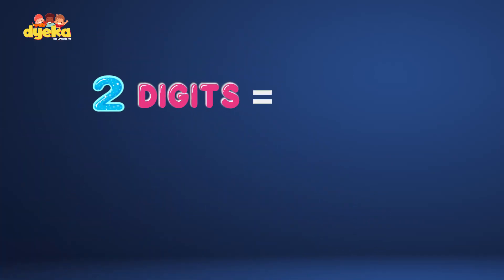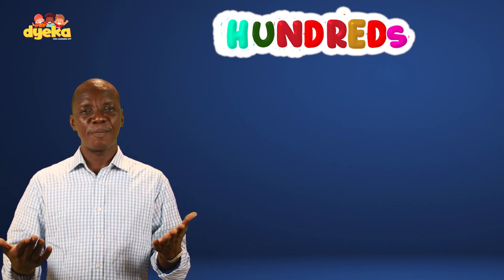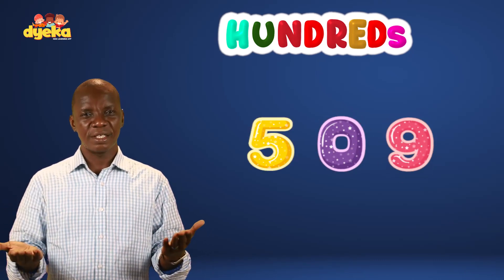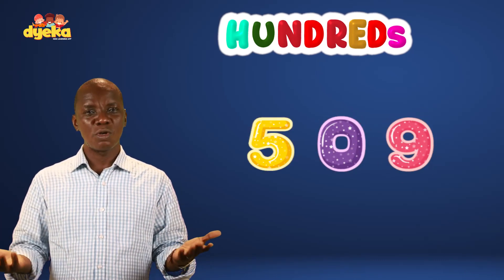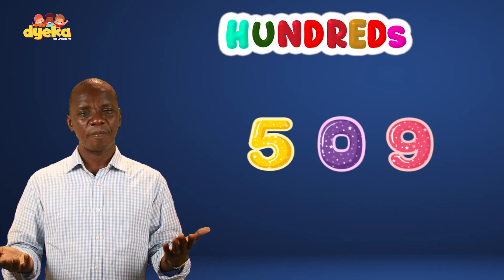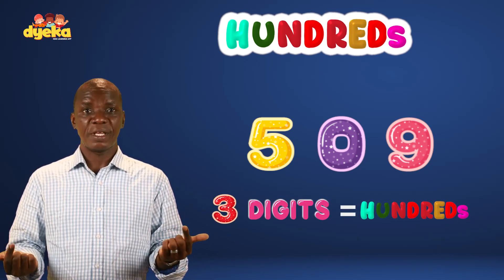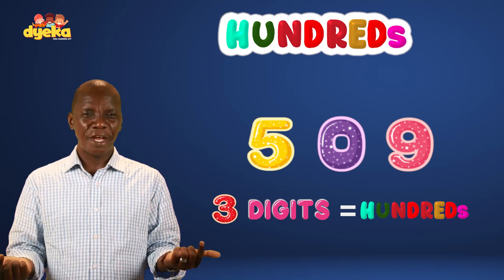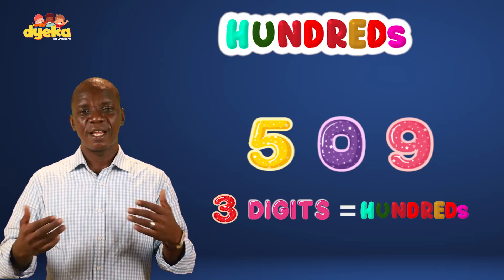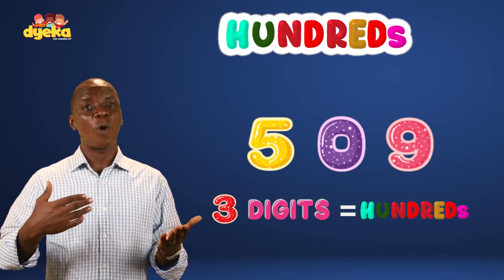You can look at any number and identify the number. If it's two digits, it's going to be in tens. If it's three digits, it's going to be in hundreds. Now I'm going to give you another number and the number is 5, 0, 9. How do I tell what number this is? All I have to do is look at the digits 5, 0, 9 — three digits, that's hundreds. So that is going to be 509. That was pretty easy. Looking at a number, you can actually tell if the number is in tens or in hundreds.